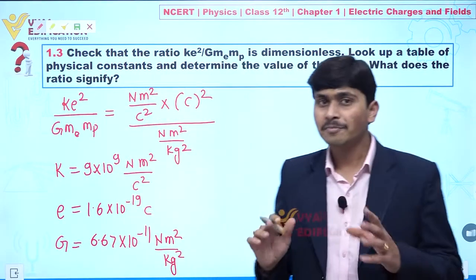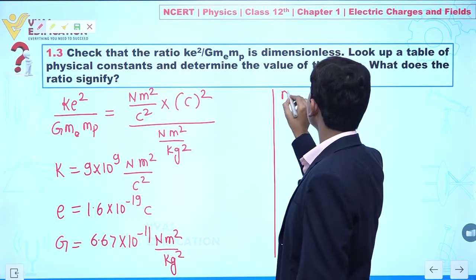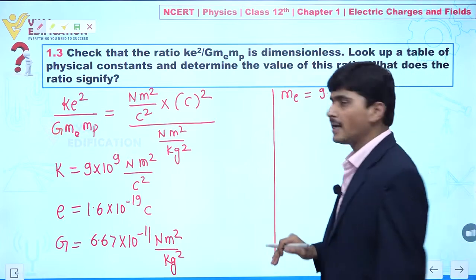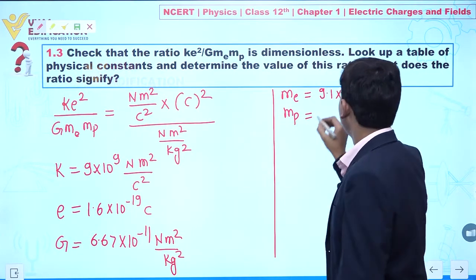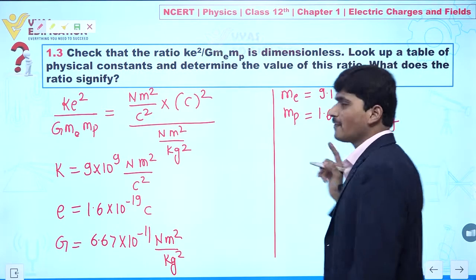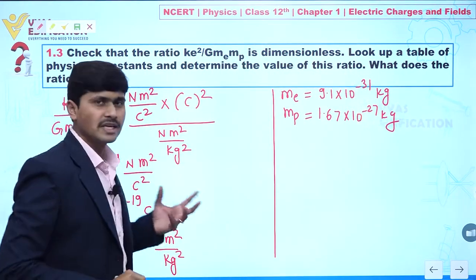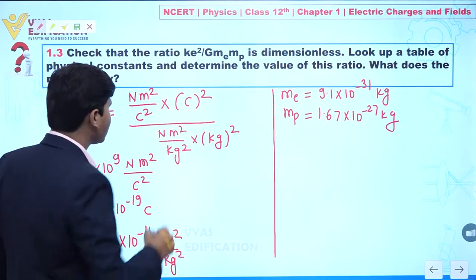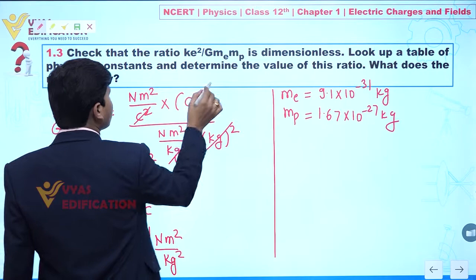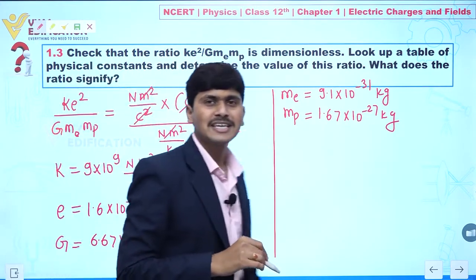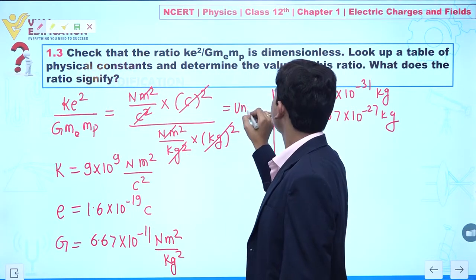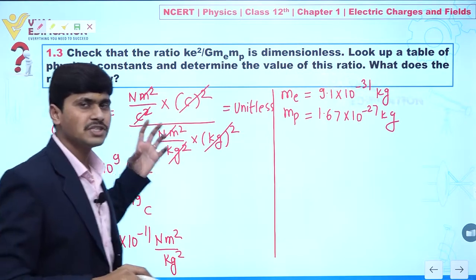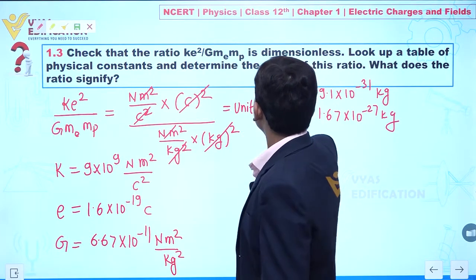Here me and mp are the mass of an electron and mass of a proton. Mass of an electron is 9.1 × 10⁻³¹ kg and mass of a proton is 1.67 × 10⁻²⁷ kg. The units of masses are kilogram, so kilogram² cancels out, coulomb² cancels out, and newton·meter² also cancels out. This value is unit-less, and therefore dimensionless — M⁰L⁰T⁰. This ratio is proved to be dimensionless.